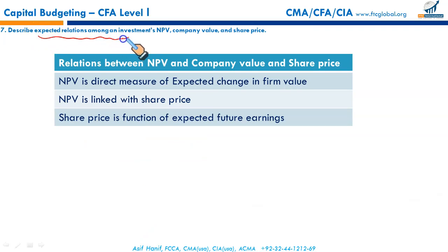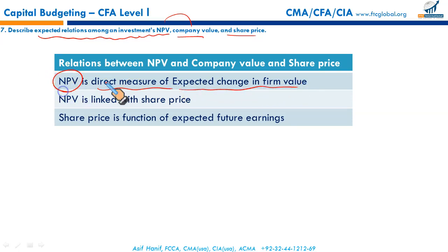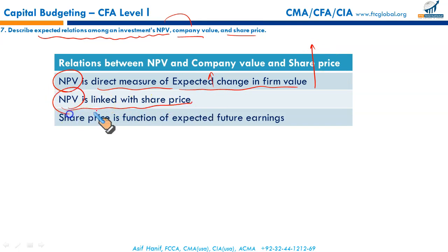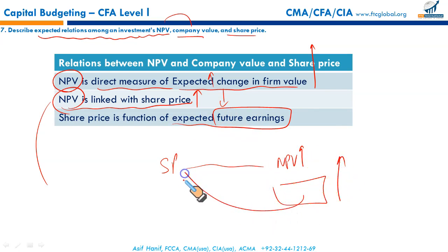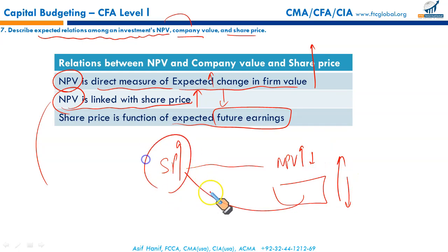Finally, NPV is the direct measure of expected change in the firm's value. If a project has a positive NPV and the company undertakes it, it adds to the value of the firm, and since firm value rises, share price will rise as well. Positive NPV increases share price. If NPV is negative, firm value falls and share price decreases. Share price is a function of future earnings — higher NPV means higher expected earnings, which feeds into a higher share price. That completes your reading on capital budgeting.